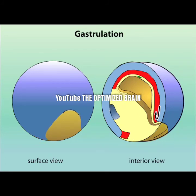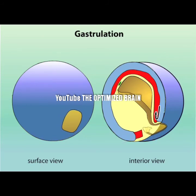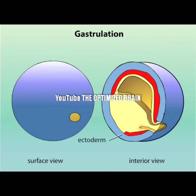As the ectoderm extends around the embryo, another set of bottle cells forms. These cells migrate into the embryo and other surface cells follow them, creating the ventral lip of the blastopore. By the end of gastrulation, the ectoderm has surrounded the embryo, endoderm lines the inside, and mesoderm lies between the two.